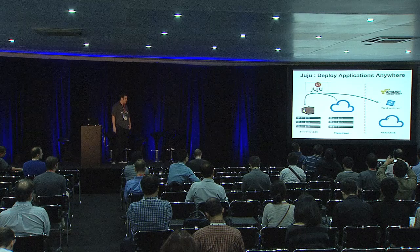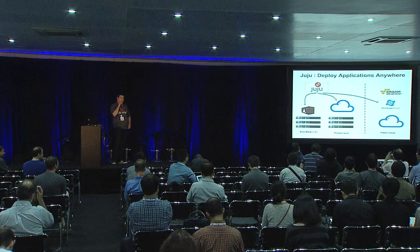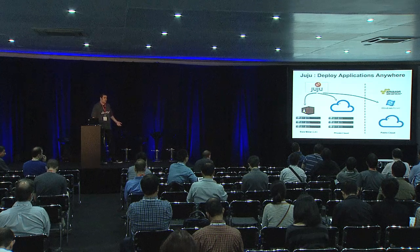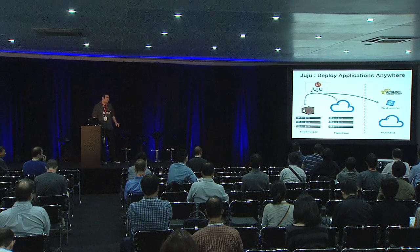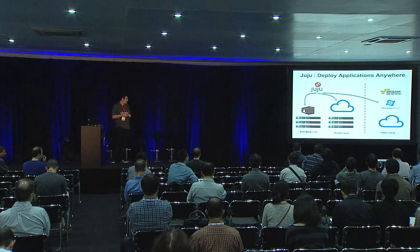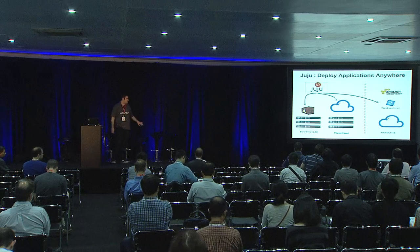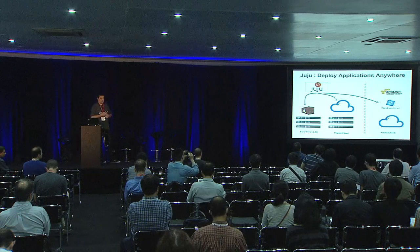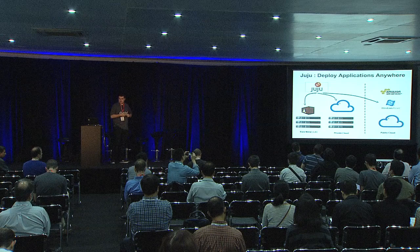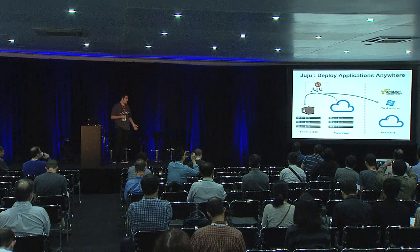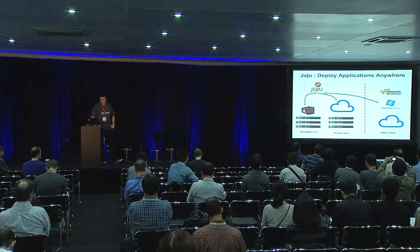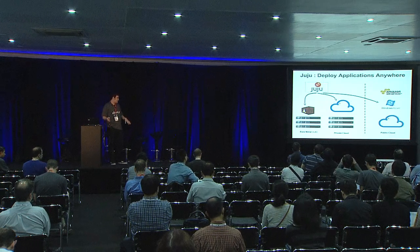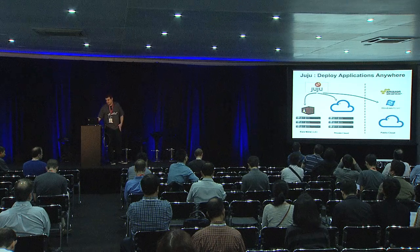Juju is machine agnostic. It has a concept of machine providers and abstracts away all of the details about where you're getting hardware for your workloads, whether they be virtual or otherwise. It's pluggable. So far we have support for a number of public clouds — Rackspace, HP public cloud, Amazon, Azure. We also support deploying workloads using Juju to internal on-premise private clouds via the OpenStack API, as well as bare metal servers, local LXC containers, and virtual machines.